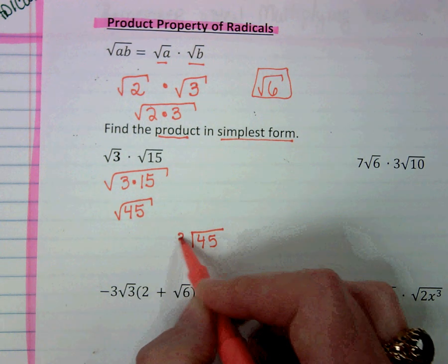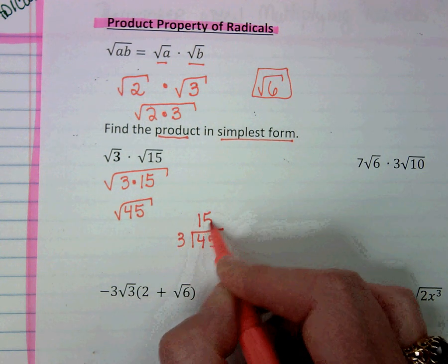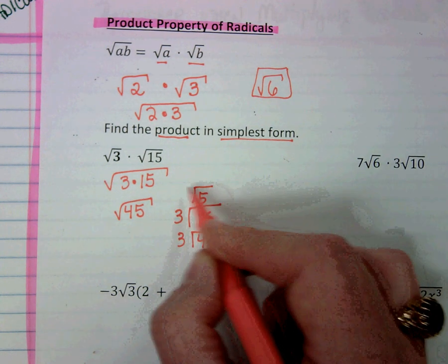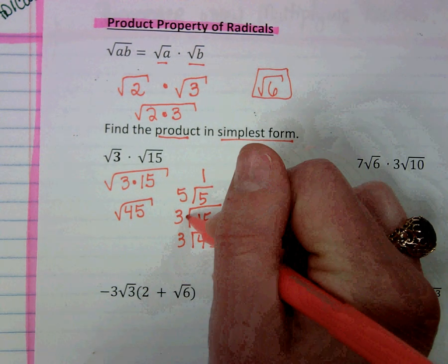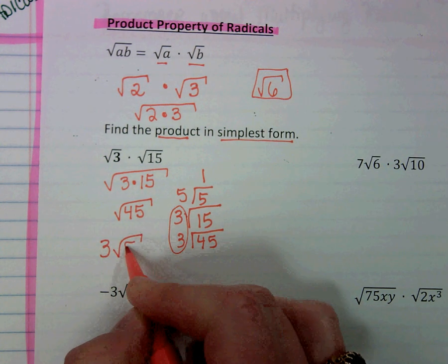So now we need to make sure this is simplified. So we're going to birthday cake 45. And see, I've already broken it back down to 3 times 15. So sometimes it's silly to repeat our work. And so then I have a pair of threes with a five left over, so it would be 3√5.